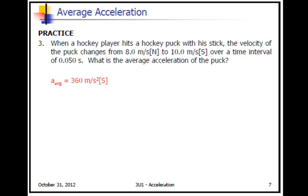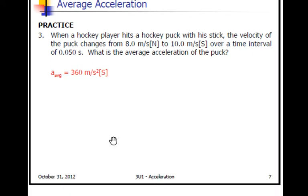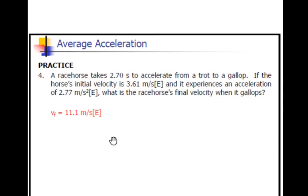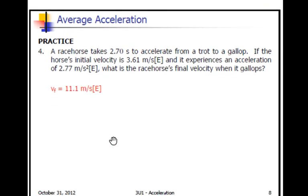Let's look at the next problem. This is our last problem. A racehorse takes 2.7 seconds to accelerate from a trot into a gallop. If the horse's initial velocity is 3.61 meters per second east, and it experiences an acceleration of 2.77 meters per second squared east, what is the final velocity of the racehorse?